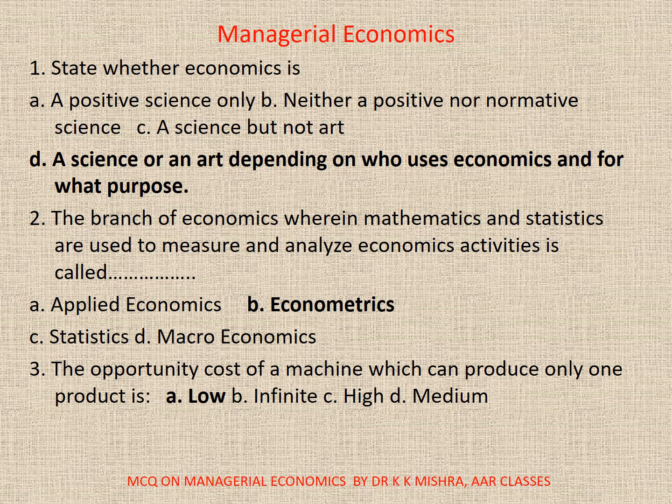Question 2: The branch of economics wherein mathematics and statistics are used to measure and analyze economic activities is called A. applied economics, B. econometrics, C. statistics, or D. microeconomics. The correct option is B: econometrics.